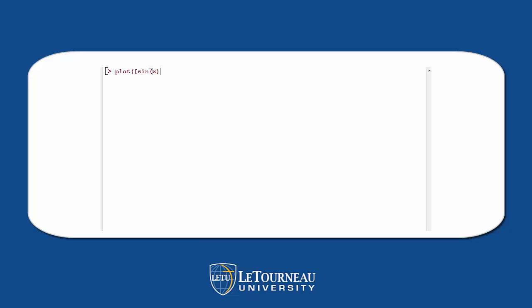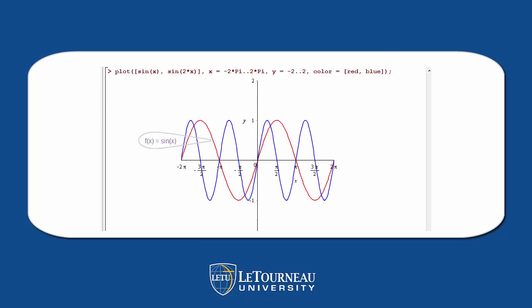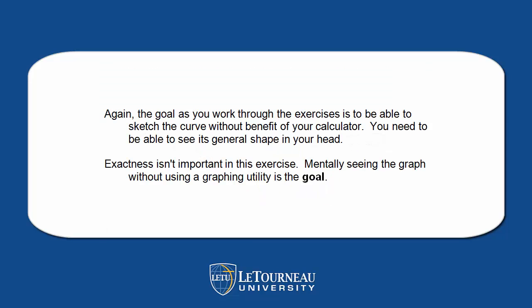Now let's do our fourth transformation — let's stretch or shrink horizontally. So where's the horizontal stretch or shrink going to be? We multiply x by 2, and then graph the sine of 2x. Notice I always look at minus 2 pi to plus 2 pi — it's a good interval when dealing with these transformations. Look how much skinnier sine of 2x is compared to the red one. In fact, notice that the period of sine of 2x is pi instead of 2 pi. Again, what's our goal? To see these in your head without using your calculator to graph them.